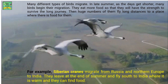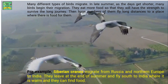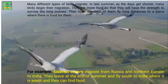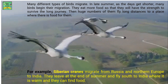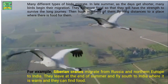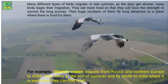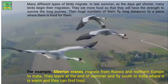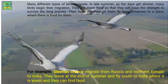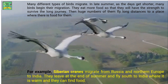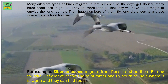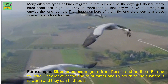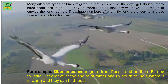Many different types of birds migrate. In late summer, as the days get shorter, many birds begin their migration. They eat more food so that they'll have enough strength to survive the long journey, then huge numbers of them fly long distances to a place where there is food. For example, Siberian cranes migrate from Russia and Northern Europe to India. They leave at the end of summer and fly south to India, where it is warm and they can find food.